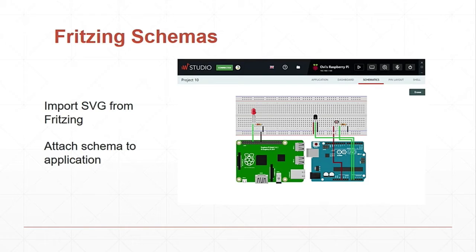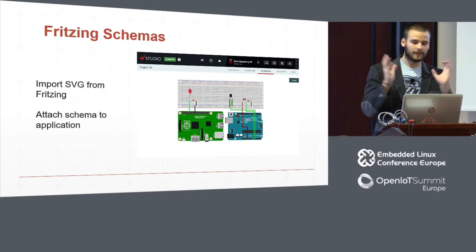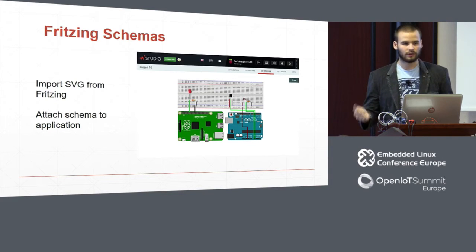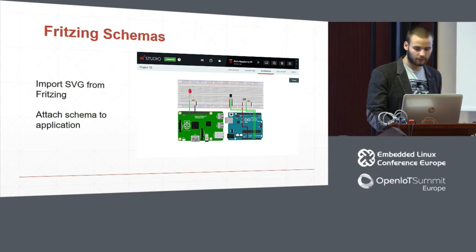For users who want to make a complete solution, we have the option to import schemas from Fritzing. For example, if you want to make an automatic door for your house, you make the program in Python, JavaScript, or Blockly, and then make the schema — with a proximity sensor, a layer to know if the door is open or closed, and so on. All this can be bundled into one project and shared on the internet for others to see and try.